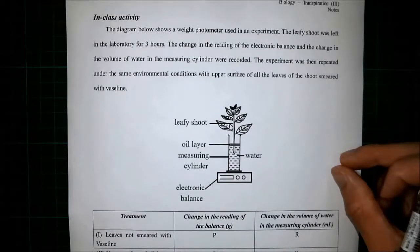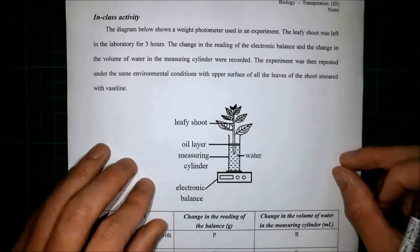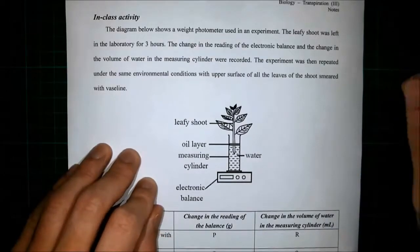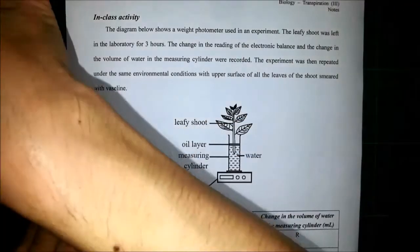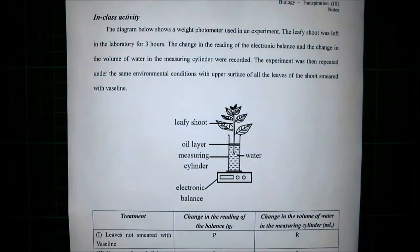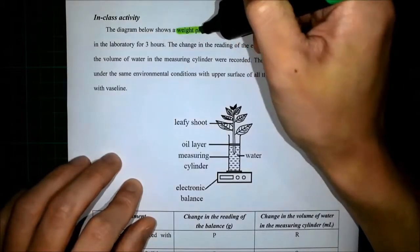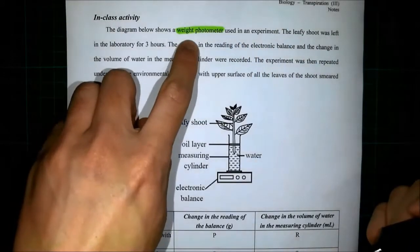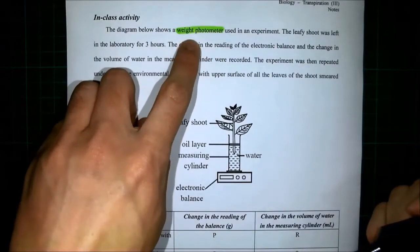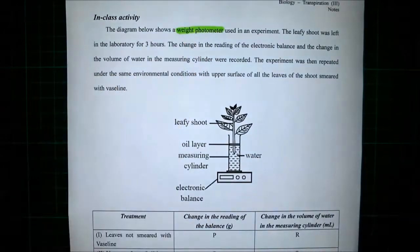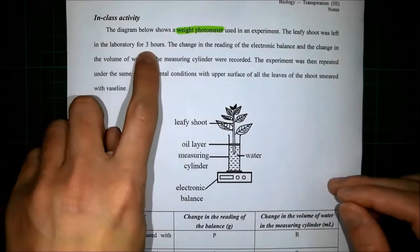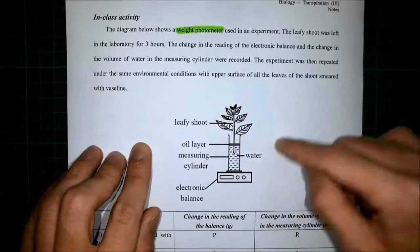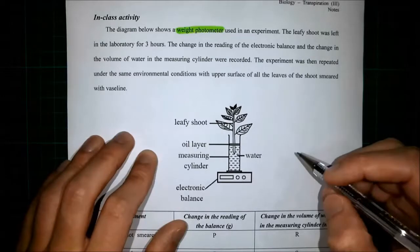Let's take a look at this experiment. This experiment is to investigate the rate of transpiration of the leafy shoot. For the transpiration chapter, it always asks questions about this experiment. What we are going to investigate is the waste potometer, and the leafy shoot was left in the laboratory for three hours.